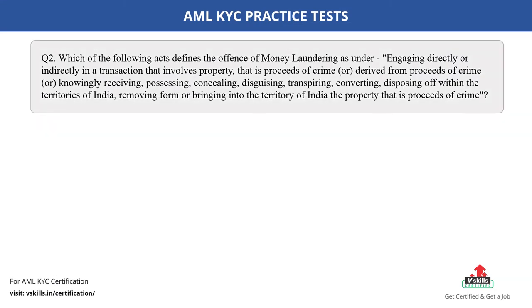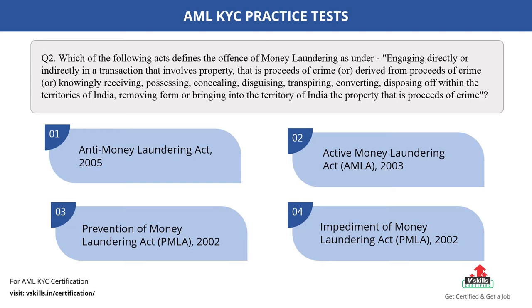Question number 2. Which of the following acts defines the offense of money laundering as under — engaging directly or indirectly in a transaction that involves property that is proceeds of crime, or derived from proceeds of crime, or knowingly receiving, possessing, concealing, disguising, transpiring, converting, disposing off within the territories of India, removing from or bringing into the territory of India the property that is proceeds of crime? The options are: A. Anti-Money Laundering Act 2005; B. Active Money Laundering Act (AMLA) 2003; C. Prevention of Money Laundering Act (PMLA) 2002; D. Impediment of Money Laundering Act (PMLA) 2002. The correct answer is option C.